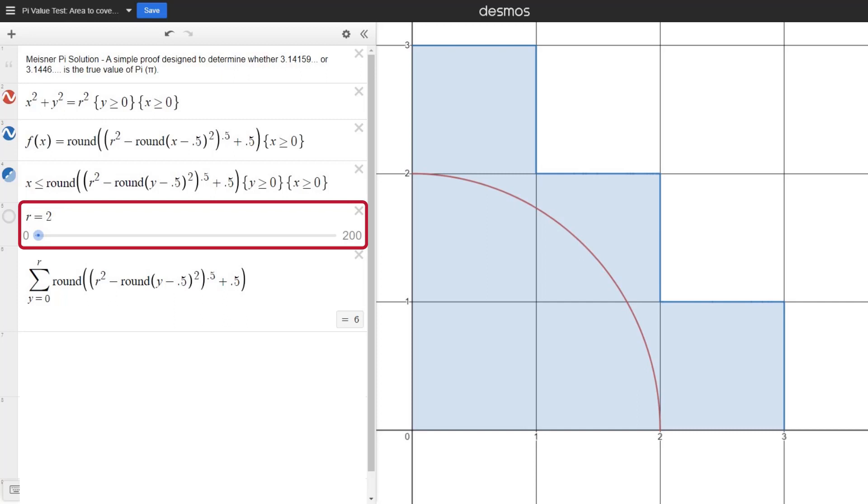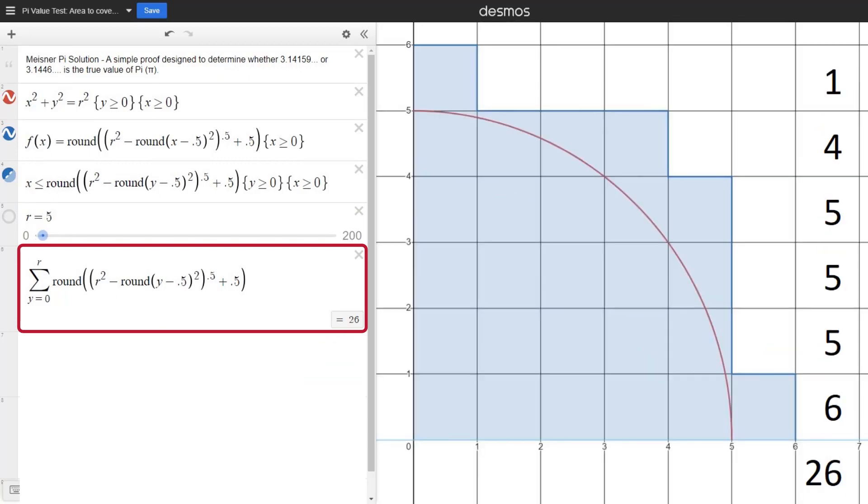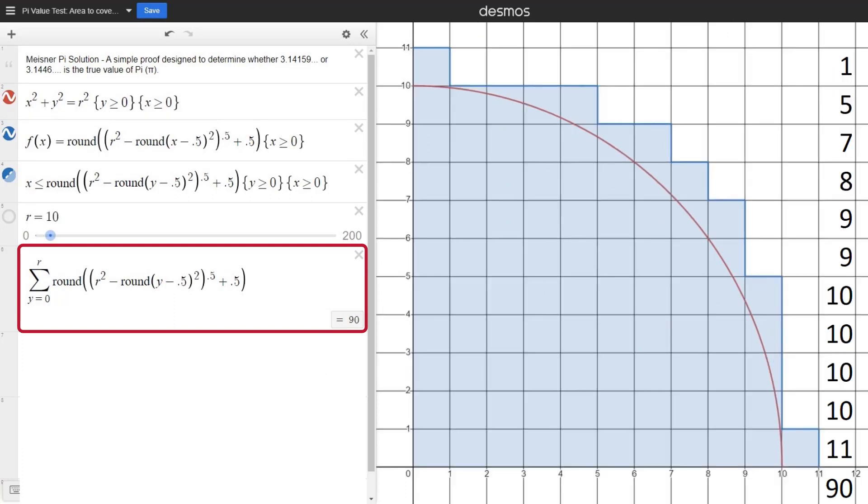So, what do we find? A quarter circle with a radius of 2 can be covered by painting 6 squares. A radius of 5 can be covered by 26 squares. A radius of 10 can be covered by 90 squares. A radius of 20 can be covered by 335 squares.